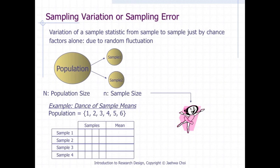Sampling variation or sampling error means variation of a sample statistic from sample to sample just by chance factors alone, due to random fluctuation. In the example of dance of sample means, the population size is 6, and the population average is 3.5. If we randomly sample four numbers and compute means, those means from random samples are not always the population value, which is 3.5. These sample means will fluctuate due to randomization. Again, this kind of fluctuation of sample characteristics is sample variation or sampling error.